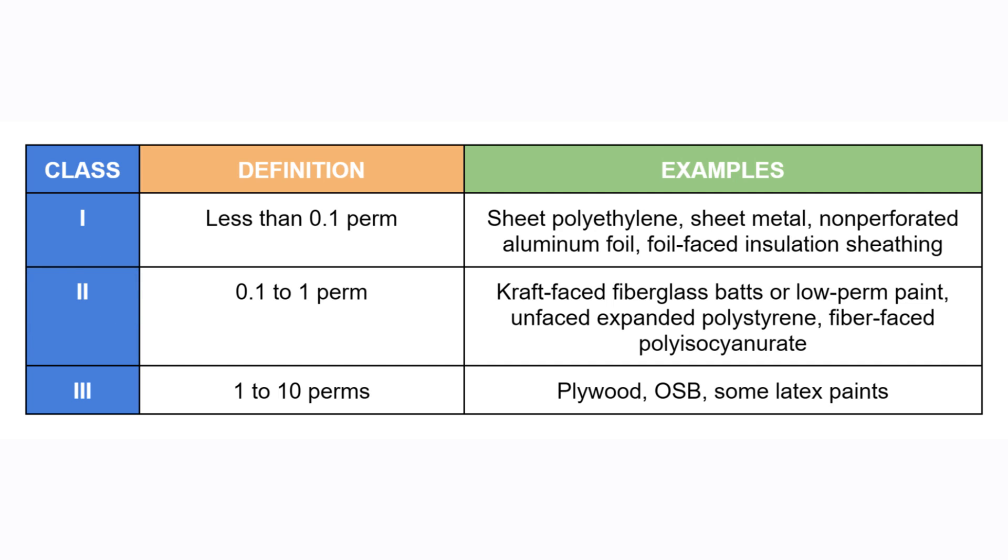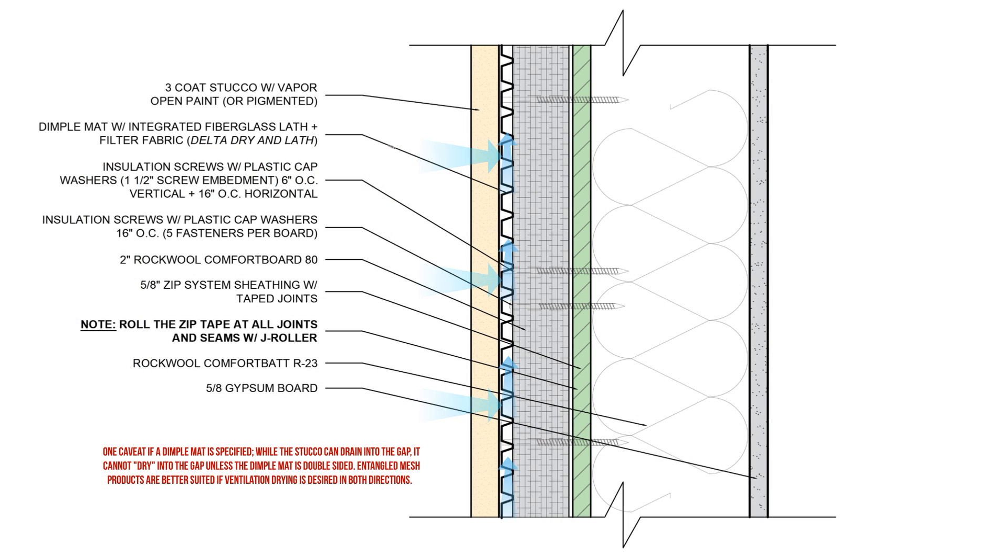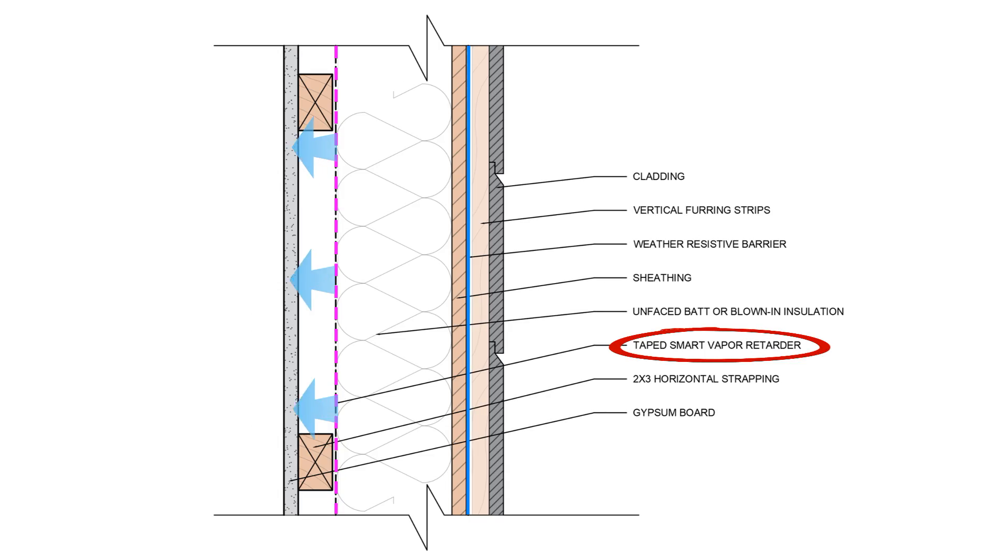Materials that have a perm rating between 1 perm and 10 perms are semi-vapor permeable. These are class 3 vapor retarders, and typically we use these materials if we need to slow down vapor diffusion, especially behind things like brick veneers or stucco, or in humid climates where we have inward vapor drive, but we still allow for some of that moisture to pass through and dry out.